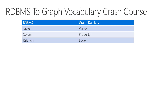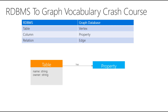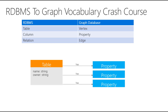Let's take the example of RDBMS to actually build something. We have a table, and in a graph database that would be called a vertex. That table has a name and an owner — those are called properties. And a table has properties, so that is actually an edge. Of course, a table can have more than one property, so we can have multiple edges.